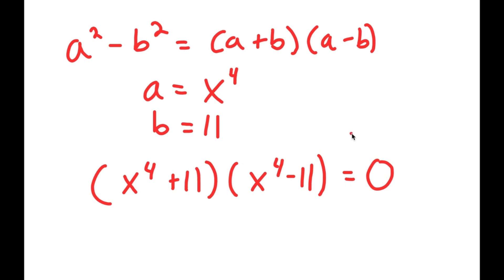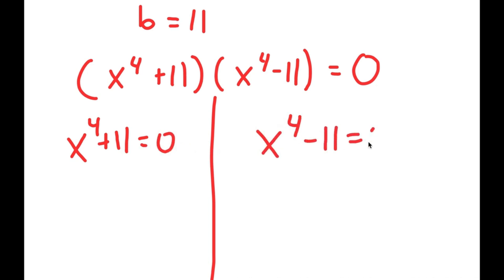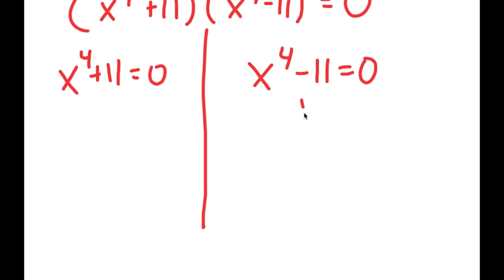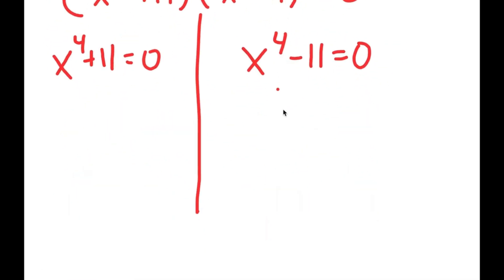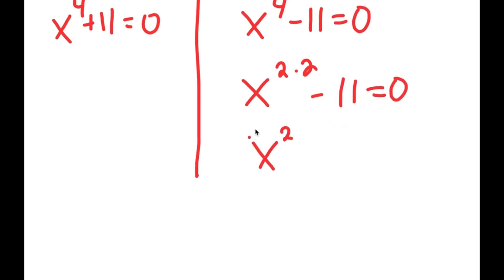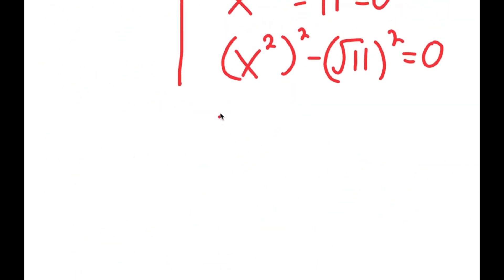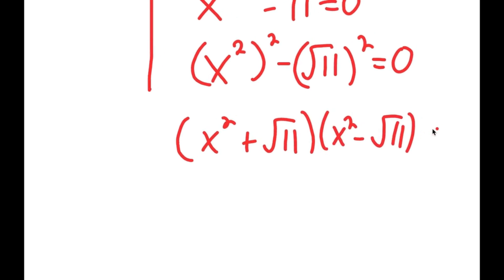From here, I get two equations: x to the power of 4 plus 11 equals 0, and x to the power of 4 minus 11 equals 0. We are still not done yet. To solve x to the power of 4 minus 11, I'm going to rewrite x to the power of 4 as x to the power of 2 times 2, which gives x to the power of 2 to the power of 2. And 11 I'll rewrite as the square root of 11 squared. So now I can use the difference of squares property again, giving me x squared plus the square root of 11, times x squared minus the square root of 11, equals 0.